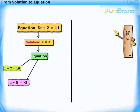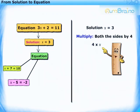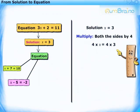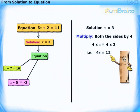Let us now build another equation from the solution, x is equal to 3. Multiplying both the sides by 4, we get 4 into x is equal to 4 into 3. That is, 4x is equal to 12.